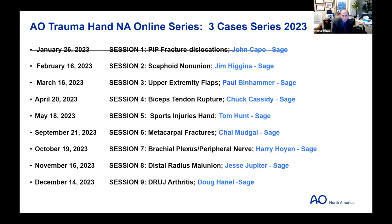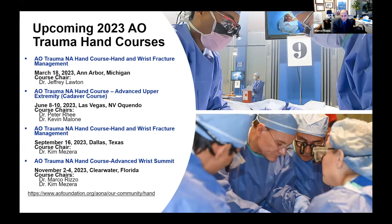This is the first of a series of nine sessions. The next one will be February 16th with a topic related to scaphoid nonunion, with Dr. Jim Higgins as the sage. Further sessions will cover flaps, tendon ruptures, sports injuries, metacarpal fractures, brachial plexus and peripheral nerve, distal radius malunion, and DRUJ arthritis. We're really excited about this series.